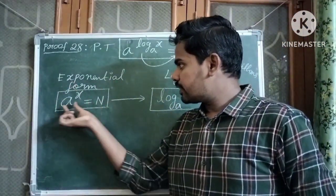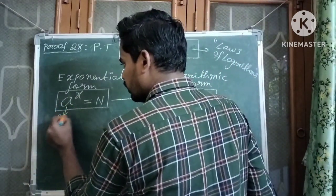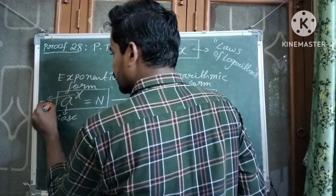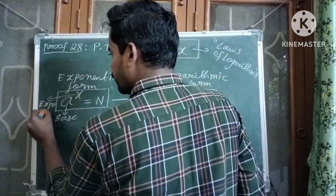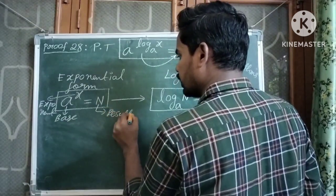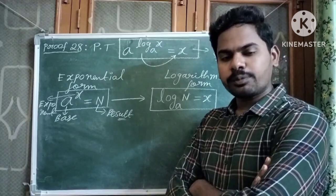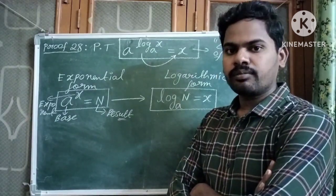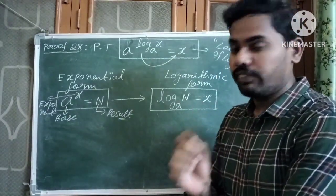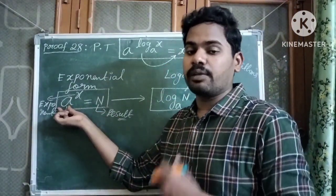In the exponential form a power x equals n: here, a is called the base, x is called the exponent, and n is called the result. The exponential form tells us the value obtained when the base is multiplied by itself x times.